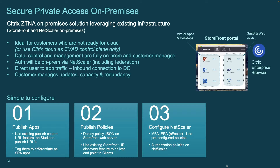Everything you need to do is three easy steps. First, publish your applications. Second, define your app security policies. And third, configure your Netscaler Gateway. That's it.